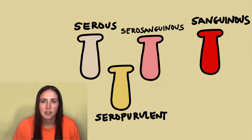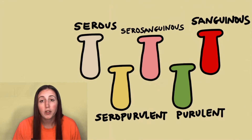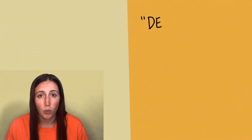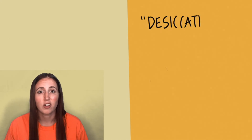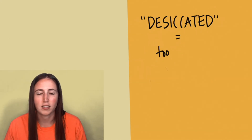Seropurulent fluid is yellow or cloudy fluid that could mean an infection is starting. Purulent fluid, which is usually yellowish or greenish, means there is an infection. When looking at exudate, first note what type it is, and second, how much. If there's no exudate and the wound is really dry, it can start to crack and infections can start in those cracks.